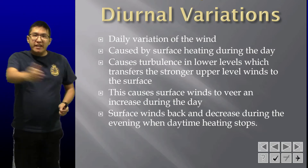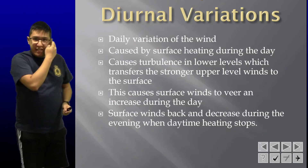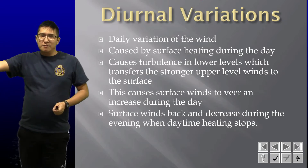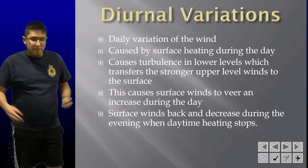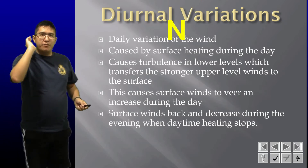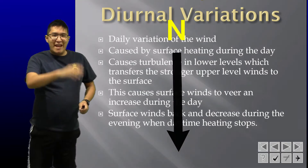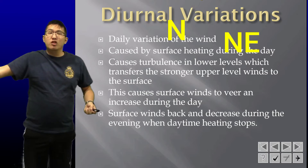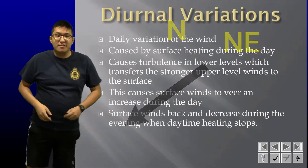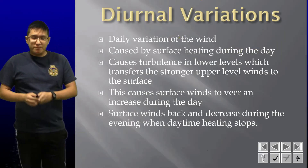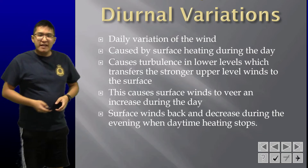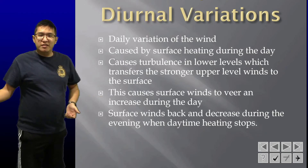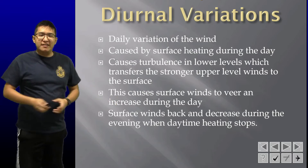Veering is the change of direction clockwise. So let's say our winds are coming from the north — throughout the day they will veer and might be coming more from the northeast rather than just north. That's veering. So remember, winds will tend to veer throughout the day, and they will also increase in strength.